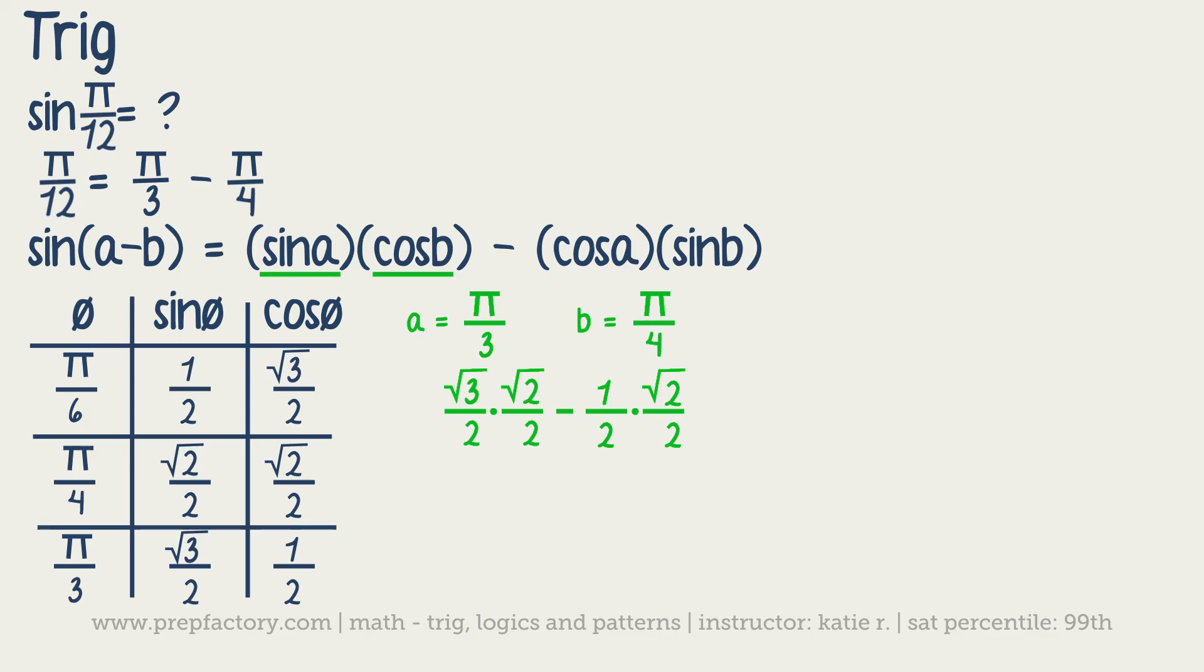Now we're just going to try to simplify this a little bit. We end up with radical 6 over 4 minus radical 2 over 4. If we're trying to combine that, all we'd have to do is just put that into one fraction. So radical 6 minus radical 2 all over 4. And that would serve as our answer.